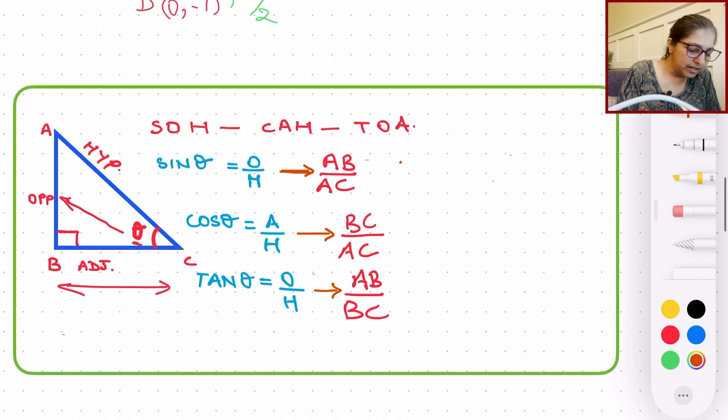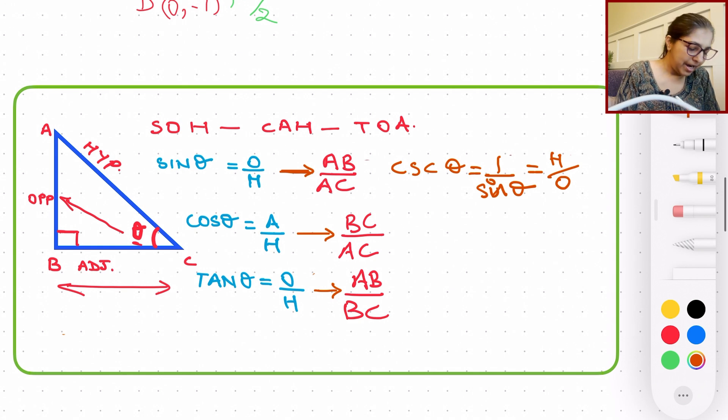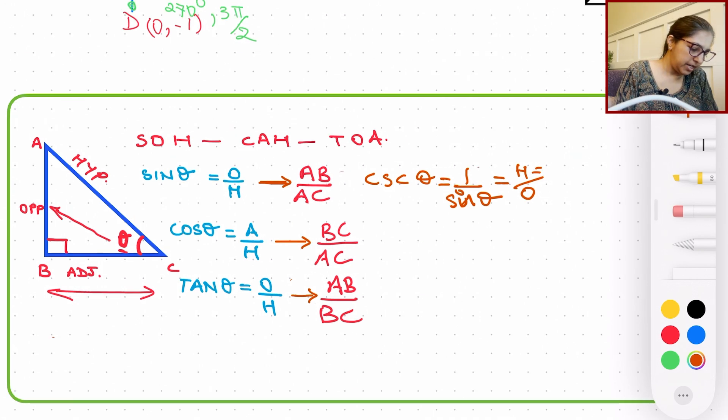which is C-S-C of theta, is nothing but one over sine of theta, right? So this will actually be hypotenuse over opposite. And if you look at our triangle, then the side lengths will be AC divided by AB.